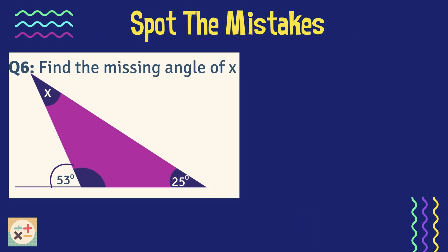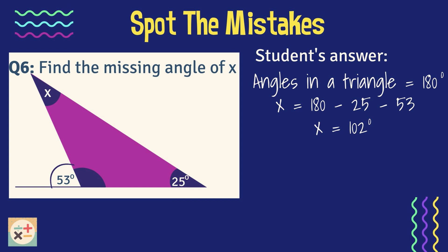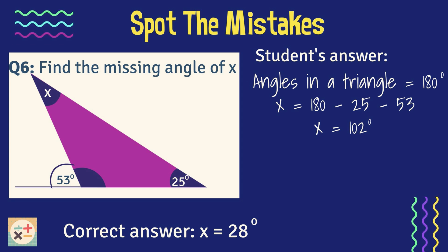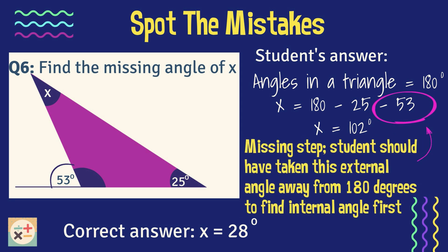Finally, question 6 asks the student to find the missing angle labeled x. See if you can spot where the student went wrong. For reference, the correct answer is 28 degrees. We can see here that the student used the external angle of 53 degrees in their calculation, using the formula for finding the angles in a triangle. As this is an external angle, they should have first found the internal angle by using the angles on a straight line rule. They should then have used this internal angle they had calculated, which is 127 degrees, in their calculation of angles in a triangle.